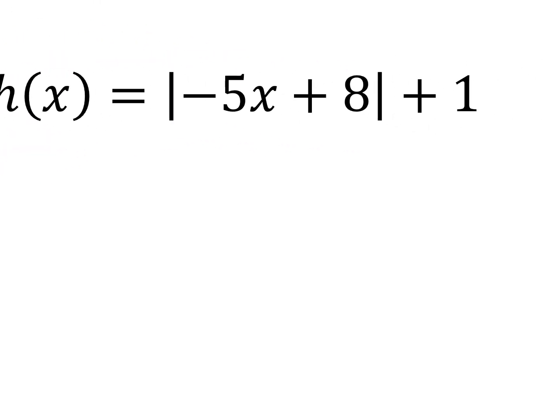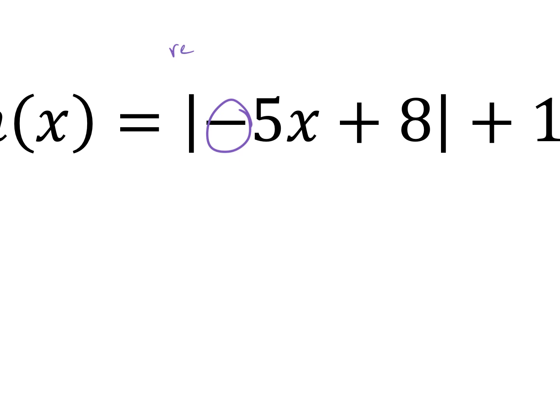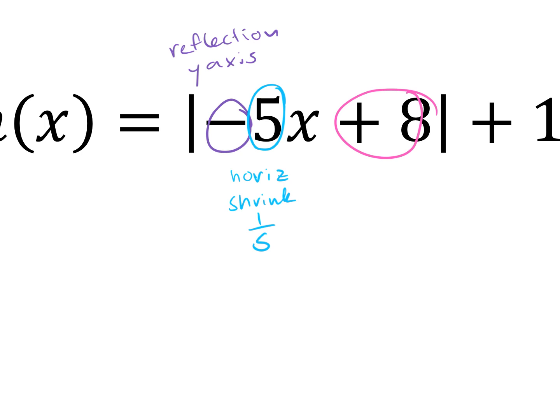For number 7, a negative multiplied on the inside is a reflection over the y-axis. Multiplying by 5 on the inside is a horizontal shrink — it's horizontal, not vertical, and you take the reciprocal, so it shrinks by a factor of 1/5. Remember: when it's on the inside, it's horizontal and it's the opposite of what you'd think. Adding 8 on the inside shifts left 8, and then up 1.